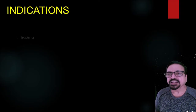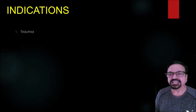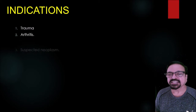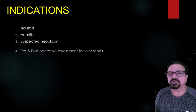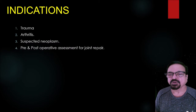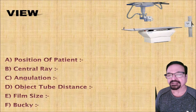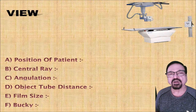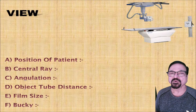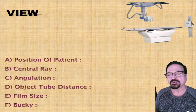Now let us go to the shoulder joint proper. What are the indications? Indications are trauma to the shoulder joint, arthritis, suspected neoplasm around or of the bone of the joint, and pre- and post-operative measurement of the joint repair — pre-operative for designing the operation and post-operative to know how things are progressing.